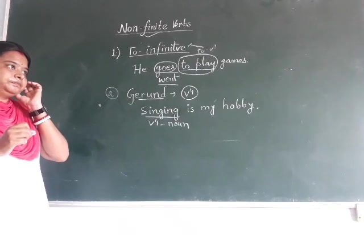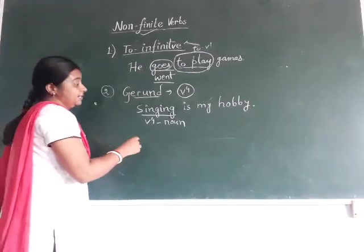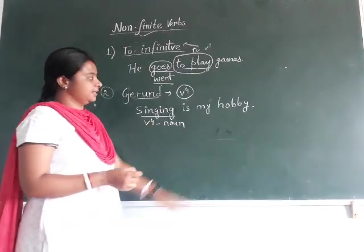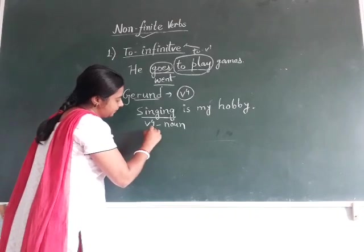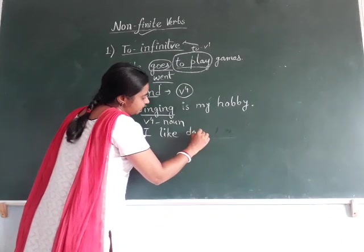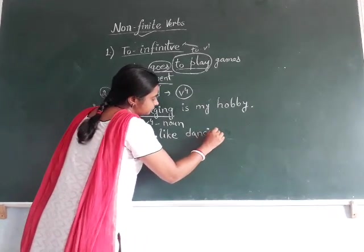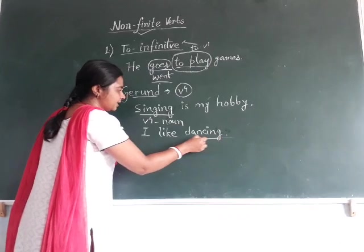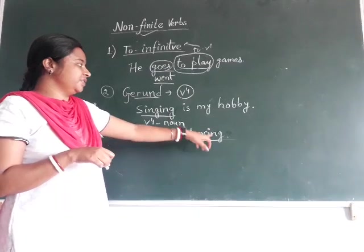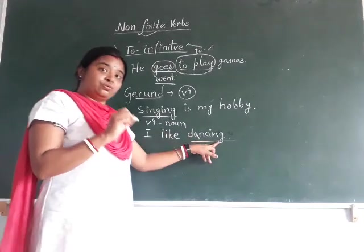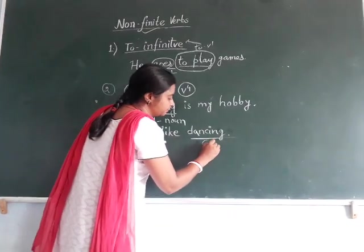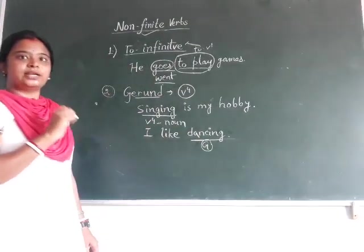Another example: 'I like dancing.' It is not necessary that the gerund becomes the subject — it can also be used as the object. 'I like dancing,' or 'I like playing.' What do I like? I like dancing. So this 'dancing' is also used as a noun here. Though it is a V4 ing form, it is used as a noun, so it will be considered as gerund and not a verb.